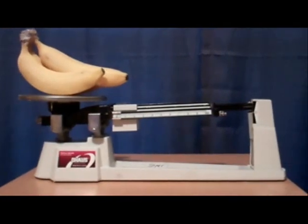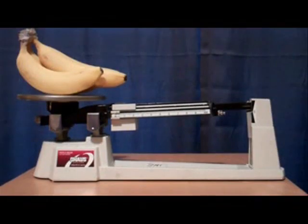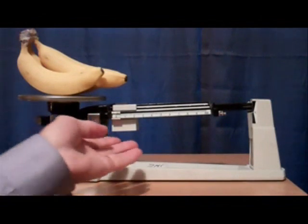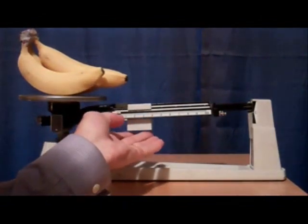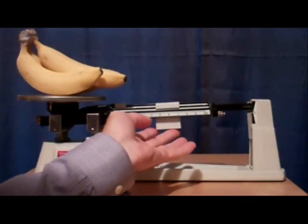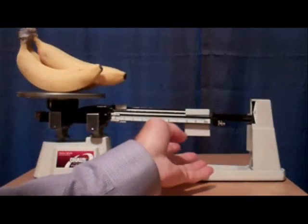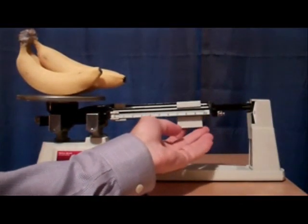Beginning with the biggest of the three riders, move the riders into the slots until the scale tips. Then back up one slot. To find the mass, I need to move each of the riders, starting with the big one, until the scale tips. Make sure the rider falls into the slots as it goes. Oops, that's too much, so I'll back it off one.